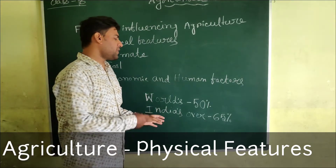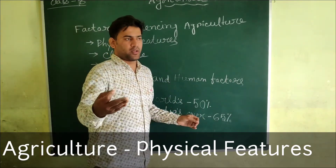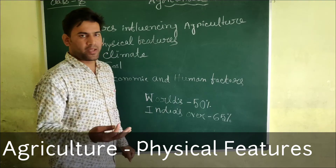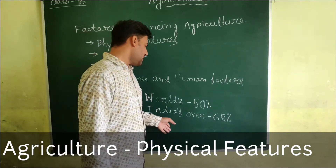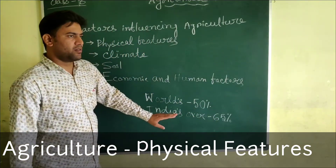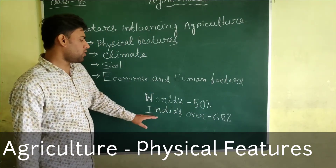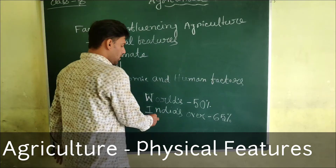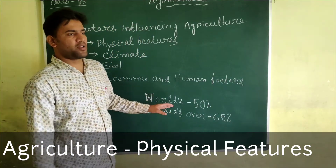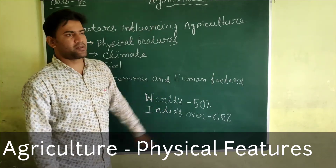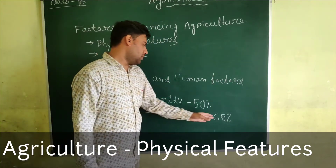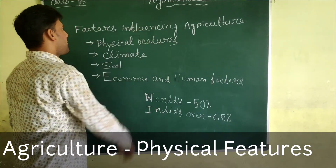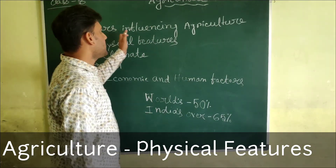We can see that the number decreases because the other two sectors are evolving rapidly. There is a decrease in this activity in every country. In India, over 70% of the Indian population was involved in agricultural activity.